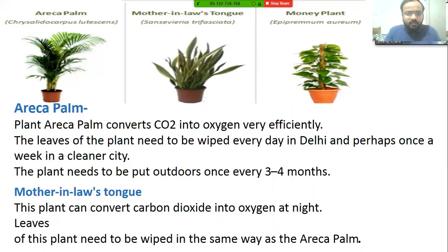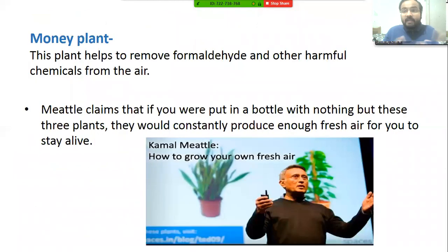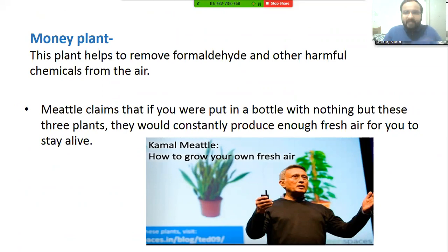The mother-in-law's tongue can convert carbon dioxide into oxygen at night. Most plants do this process only in the daytime, but this plant has the ability to do it at night as well. Its leaves need to be wiped in the same way as the Areca palm. The money plant helps to remove formaldehyde and other harmful chemicals from the air — it has the special ability to remove toxic materials present in the air and cleans it effectively.